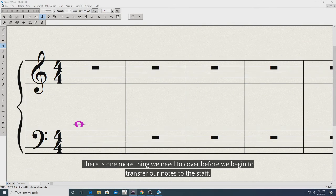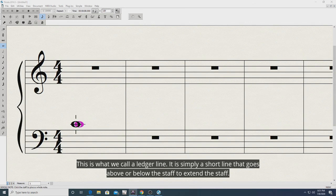There is one more thing we need to cover before we begin to transfer our notes to the staff. This is what we call a ledger line. It is simply a short line that goes above or below the staff to extend the staff.